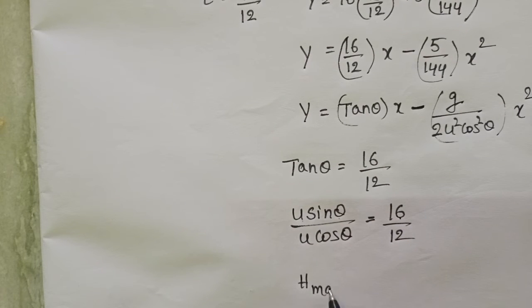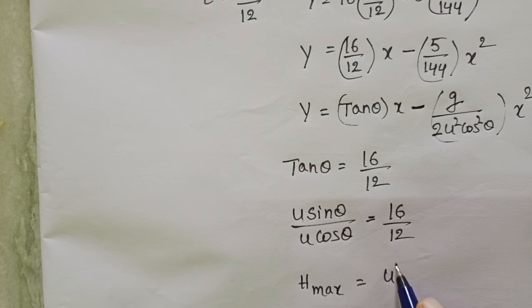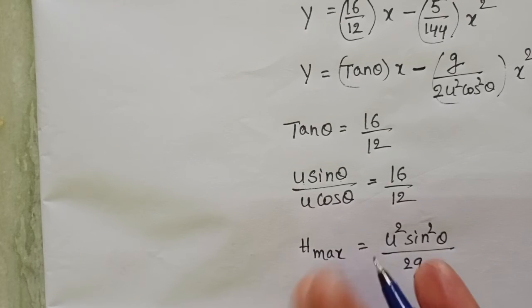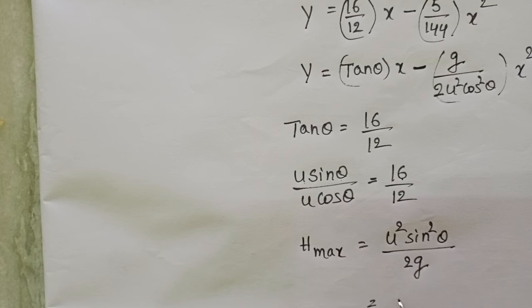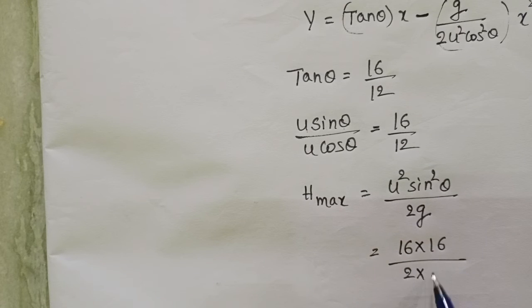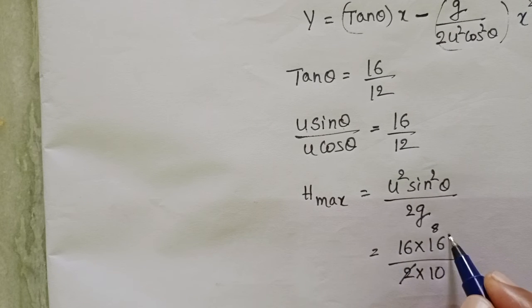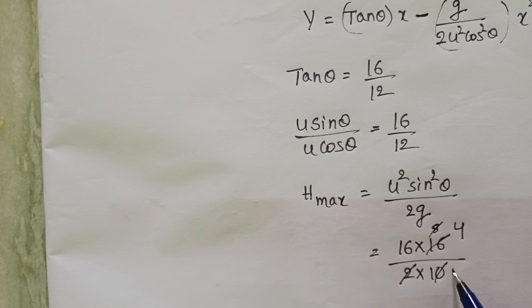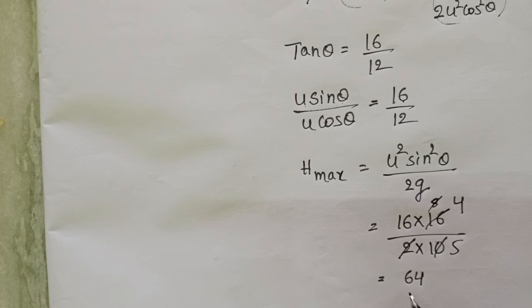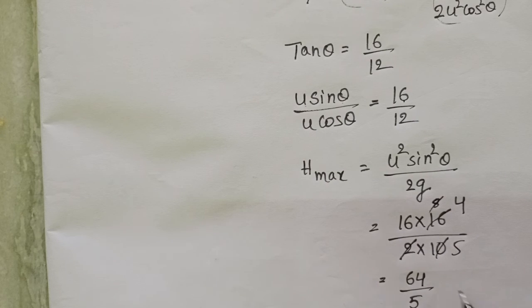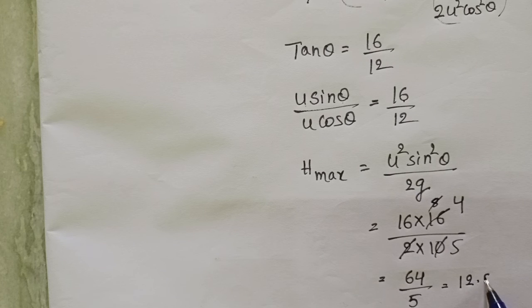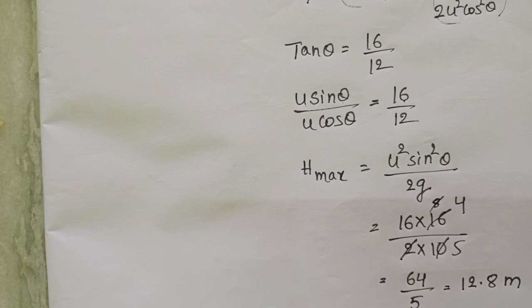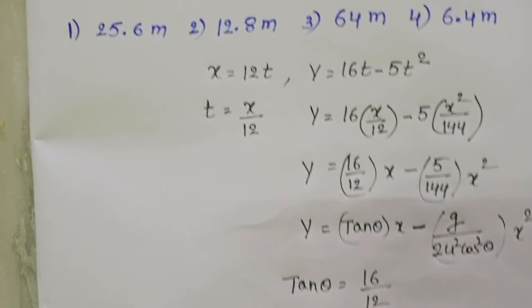Maximum height formula: u square sin square theta by 2g. u sin theta equals 16, then 16 into 16 by 2 into g value is 10. 64 by 5. So maximum height is equals to 12.8 meters.